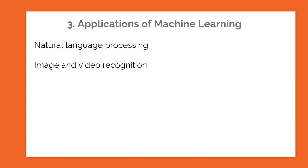The next application is image and video recognition. Machine learning algorithms can be used to analyze and classify images and videos, enabling applications such as facial recognition, object detection, and content moderation. The next one is fraud detection. Machine learning algorithms can be used to detect fraud and anomalies in financial transactions, which reduces losses for businesses and financial institutions. Bigger financial institutions have been using fraud detection through machine learning for quite some time now.